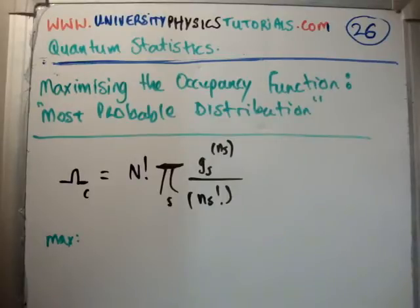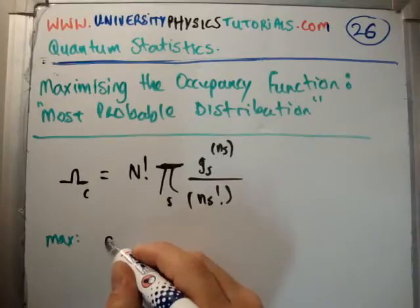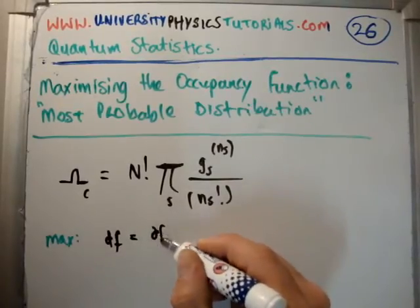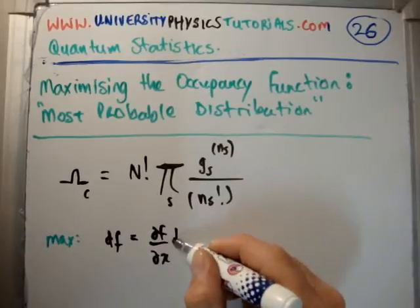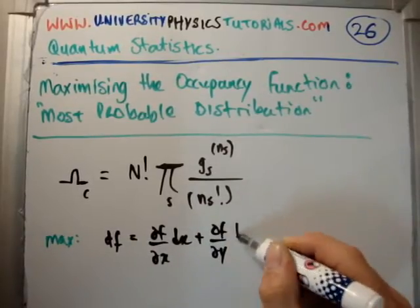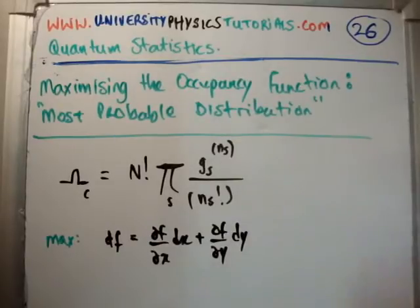So, for example, let's say we had a function, df. Well, we know that df is del f del x dx plus del f del y dy, if it's in two dimensions.